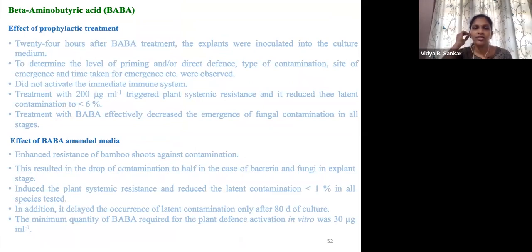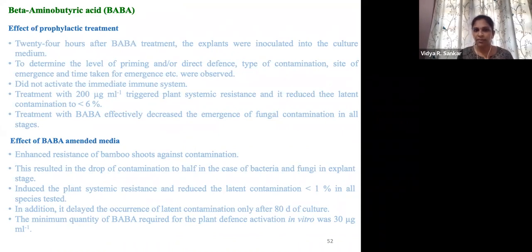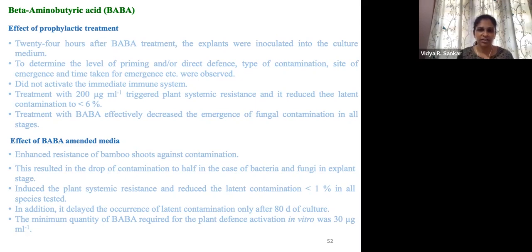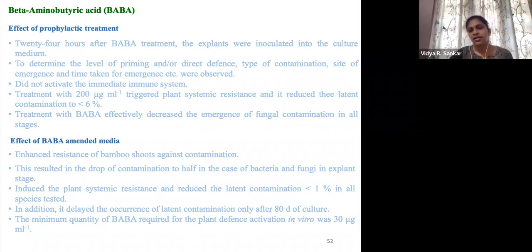Beta-aminobutyric acid was used for treatment in both ways: added to the media and treating the mother plant. The optimal concentration for treatment is 200 micrograms per ml, which reduced contamination to 6%. This is particularly working on fungal contamination, while the 6% mainly relates to bacterial contamination with no presence of any fungal contamination in most stages. For media amendment, we used a reduced concentration of 30 micrograms per ml, which totally reduced latent contamination up to 80 to 90 days of culture and reduced initial stage contamination to a level of 1%.